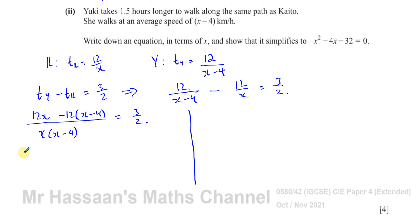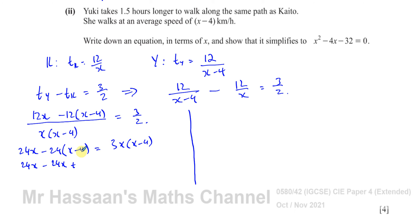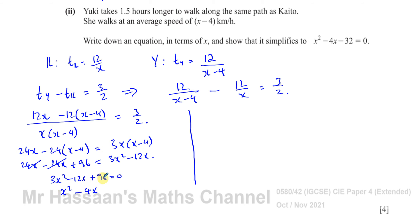This gives: 2(12x) − 2 × 12(x − 4) = 3x(x − 4), which is 24x − 24(x − 4) = 3x² − 12x. Expanding: 24x − 24x + 96 = 3x² − 12x. The 24x terms cancel, leaving 96 = 3x² − 12x. Subtracting 96 from both sides: 3x² − 12x − 96 = 0. Dividing by 3: x² − 4x − 32 = 0, which is exactly what we needed to show.